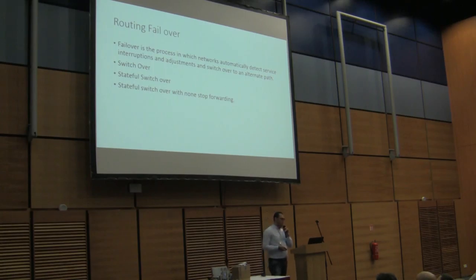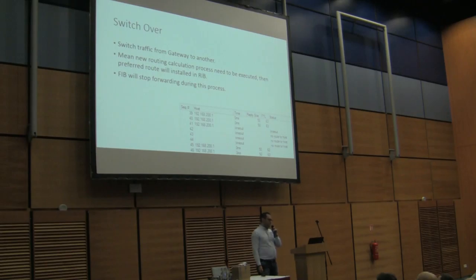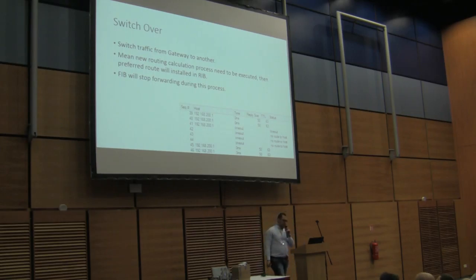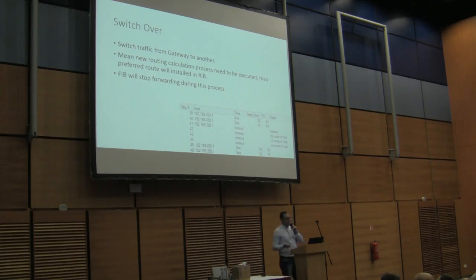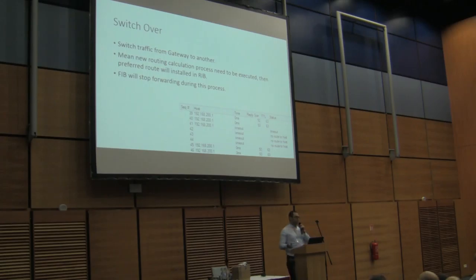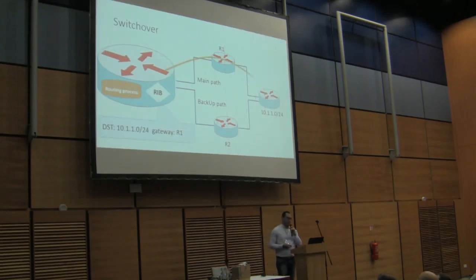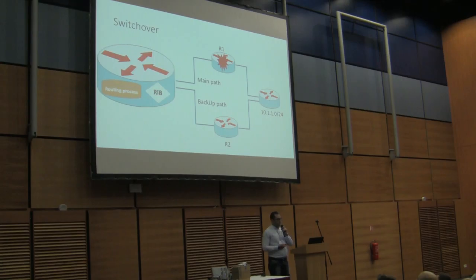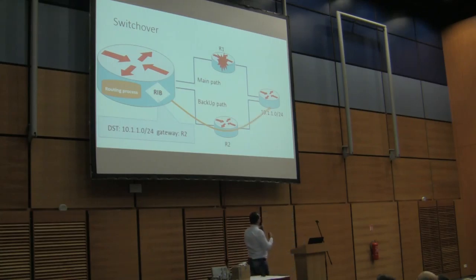Routing failover is important — we need to know exactly what happens inside our routing table. There are three types of routing failover. The first is Switchover: how we forward traffic from one router to another. If a downtime event happens, a new calculation occurs, a new route is selected, and that route is updated to the FIB. This happens in most routers when a route is removed from the routing table. For example, if we access other routers through Router 1 and it goes down, forwarding stops, the routing process executes, the RIB is updated, and then the forwarding table proceeds to forward packets again.